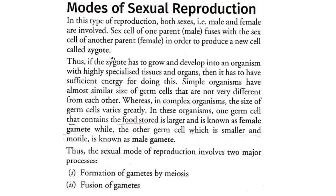So what do we call zygote? If the zygote has to grow and develop into an organism with highly specialized tissue and organs, then it has to have sufficient energy for doing this. Now where will it get energy from? Here there are only 2 cells being used — male and female cells. So here there is a special type of arrangement.